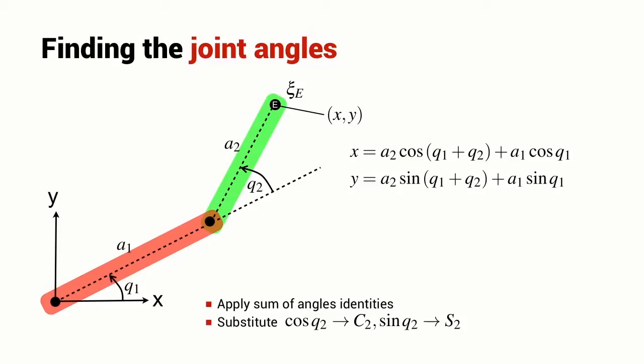And to make life a little bit easier, I'm going to make some substitutions. Wherever I had cos Q2, I'm going to write C2. Wherever I had sine Q2, I'm going to write S2. It's a fairly common shorthand when people are looking at robot kinematic equations. And here are the equations after making those substitutions.